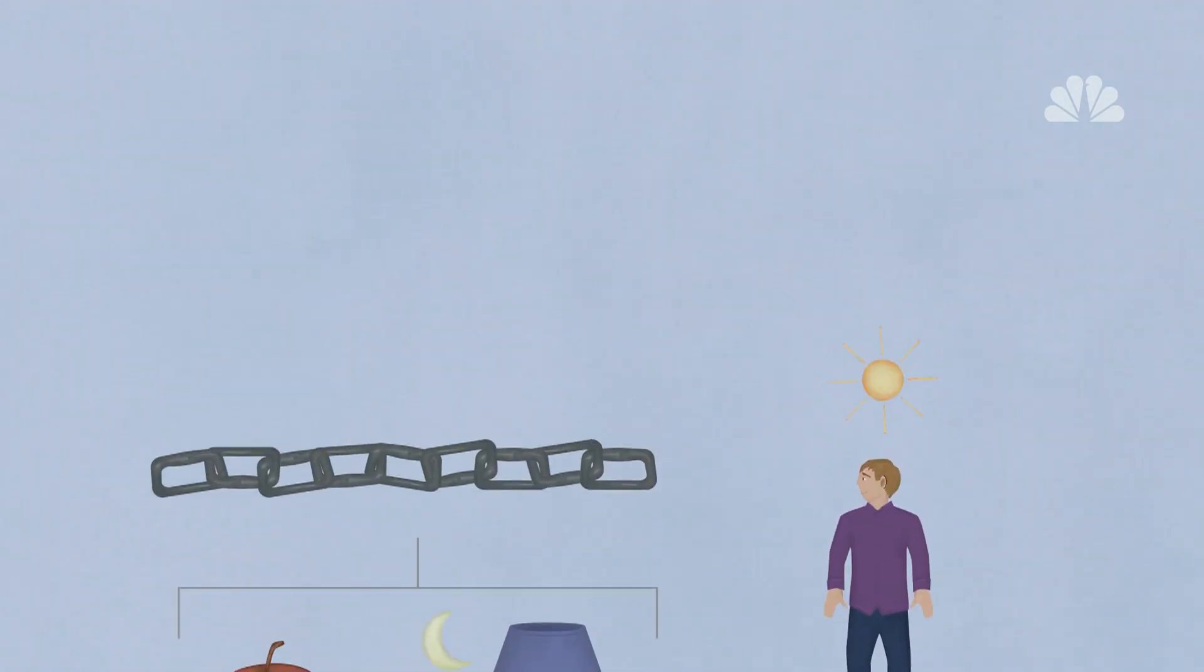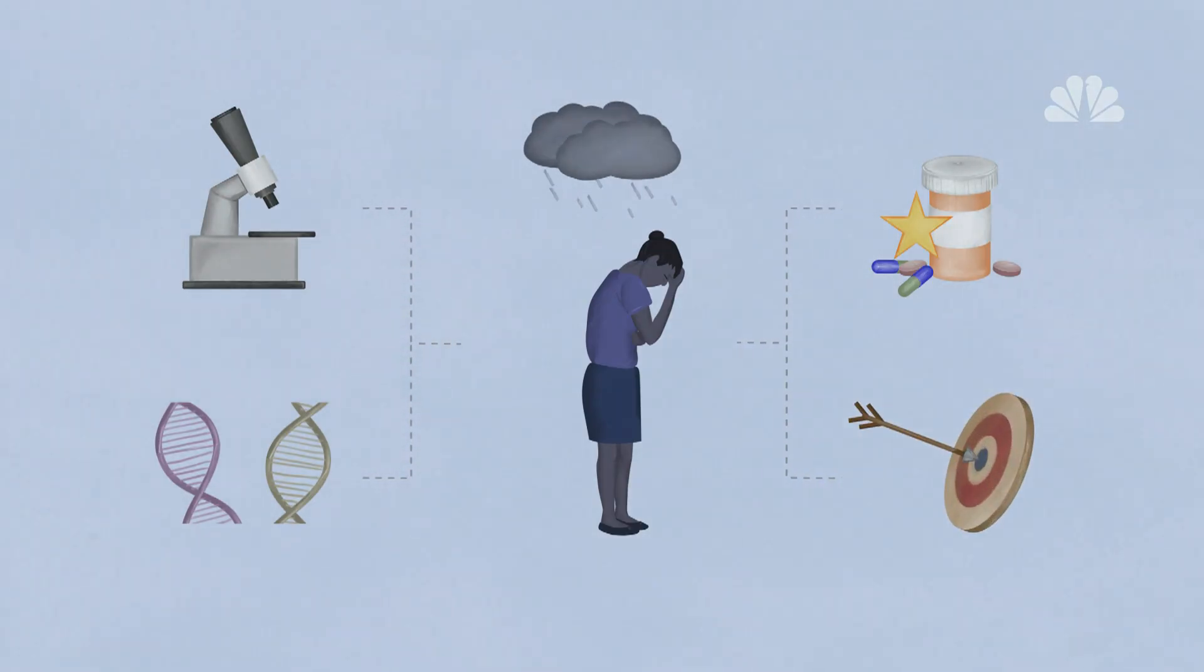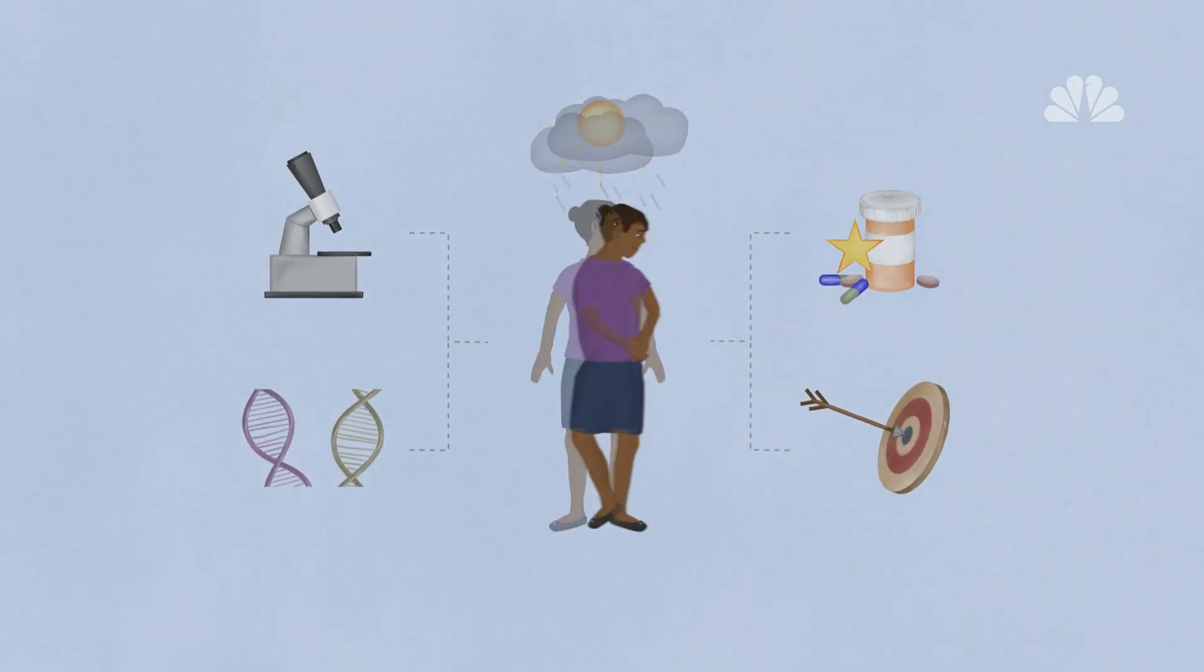Overcoming depression may become easier in the future. Scientists are learning more about how factors such as genetics influence depression, which may not only help create new drugs but also make targeted treatment possible, helping someone with depression feel like herself again.